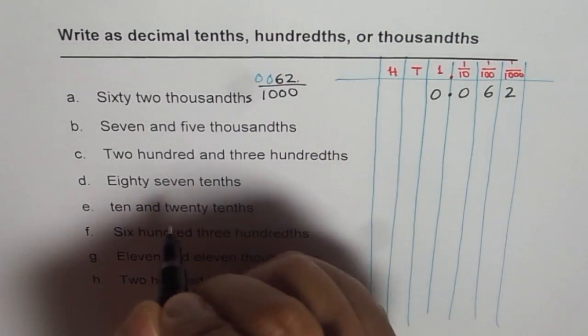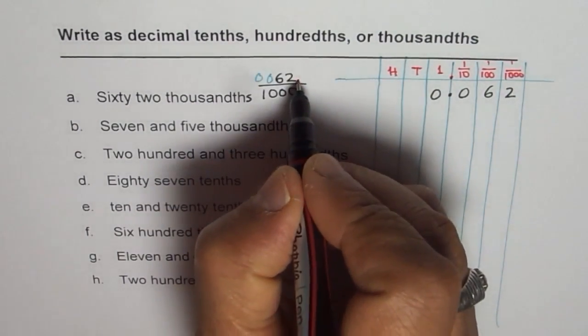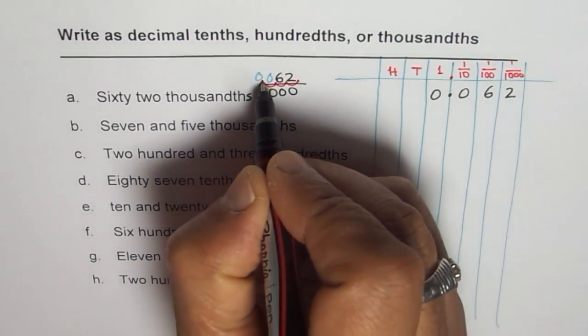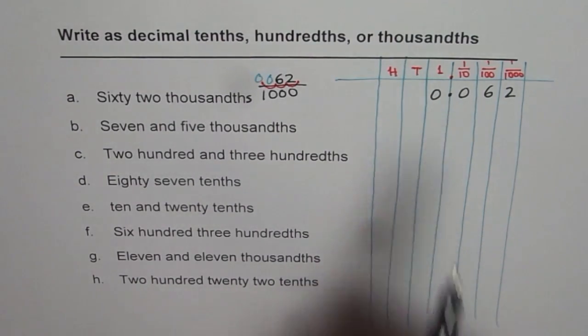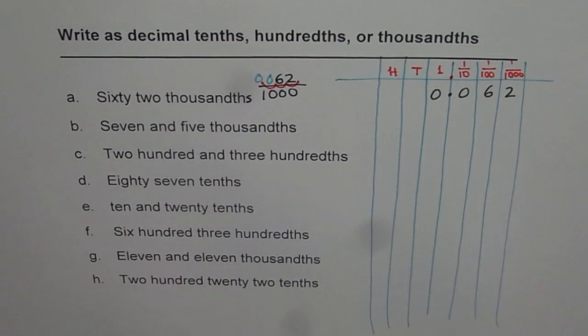So at present it is at the end of sixty-two. You can move it one, two, three. What do you get? Zero point zero six two. It works. So that is how you can check and do.